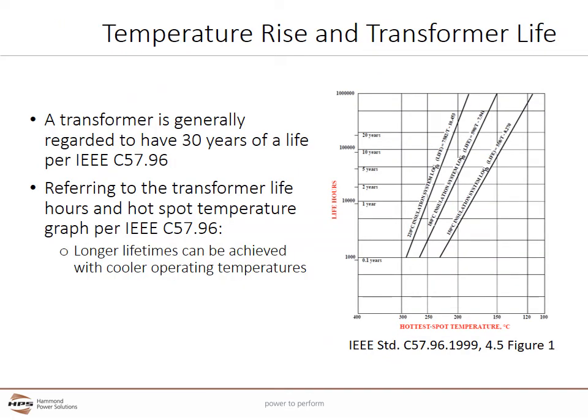A transformer is generally regarded to have 30 years of life per IEEE C57.96, although much longer lifespans are achieved. This statement covers VPI, cast resin, and liquid cooled transformers. Referring to the transformer's life hours and hot spot temperature graph per IEEE C57.96, it is easily shown that longer lifetimes can be achieved with cooler operating temperatures.